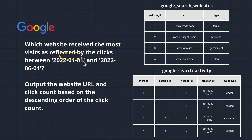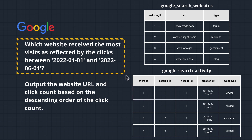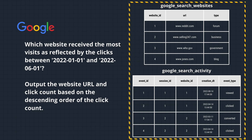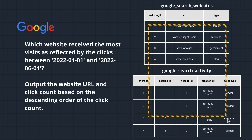Suppose the interviewer asked the following question: which websites received the most visits as reflected by clicks between January 1st, 2022 and June 1st, 2022? And suppose you are given the following sample tables — Google search activity and Google search websites. How would you solve this?